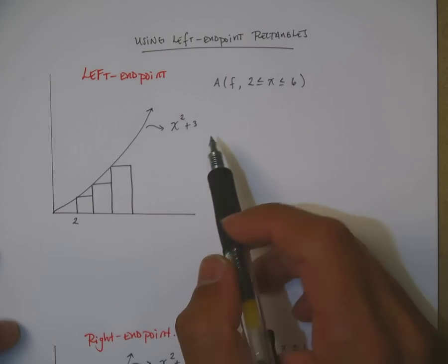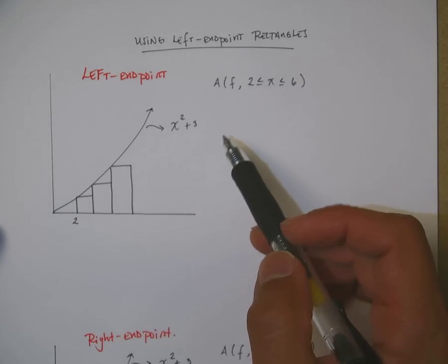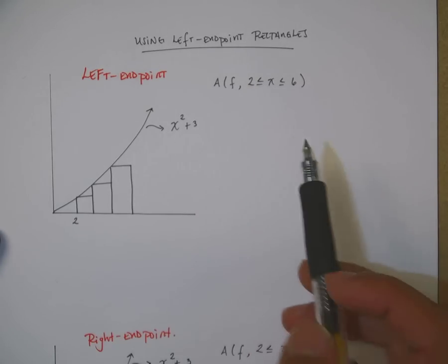Hey guys, I want to go ahead and talk about using the left endpoint rectangles to find the area underneath the curve. So this is an example.